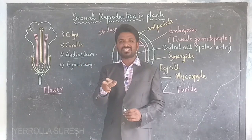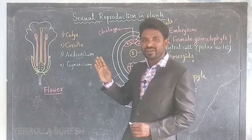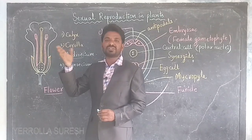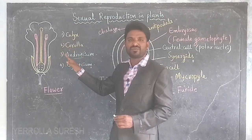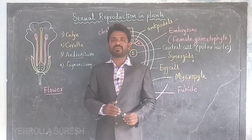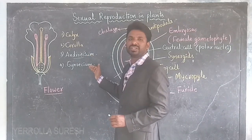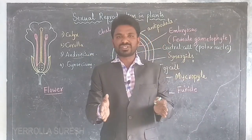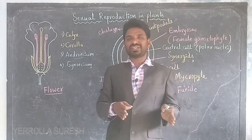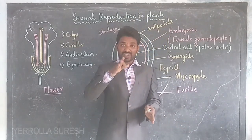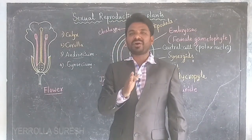If both male and female reproductive systems are present in the same flower, that is called a bisexual flower. If only one of the reproductive systems is present in a flower, that is called a unisexual flower. Both the androecium and gynoecium are involved in the process of sexual reproduction.